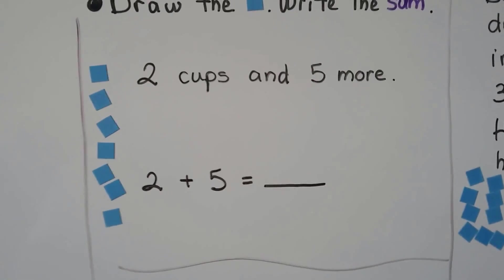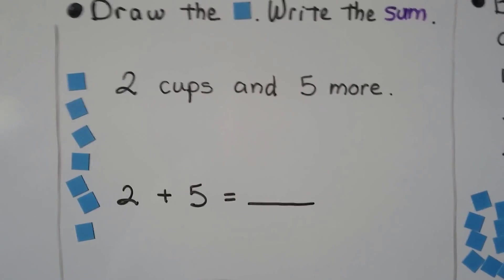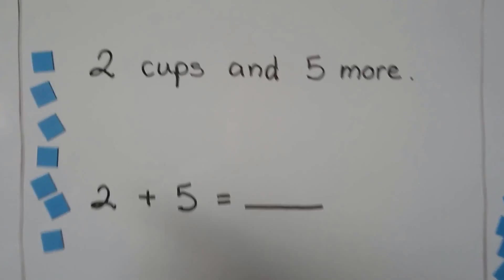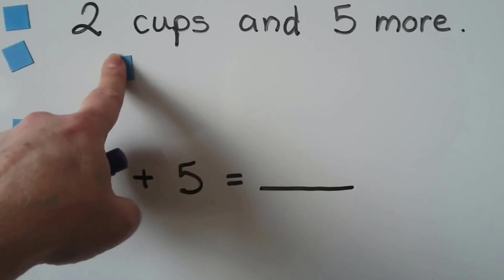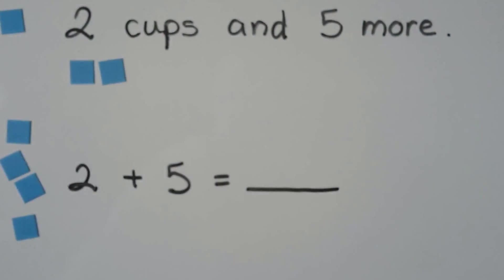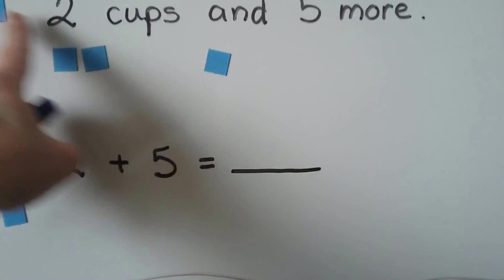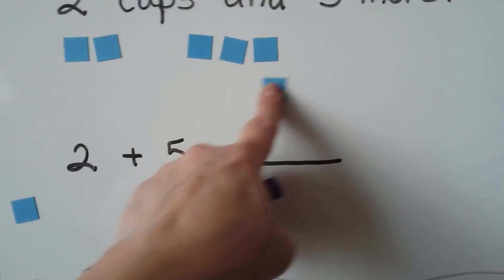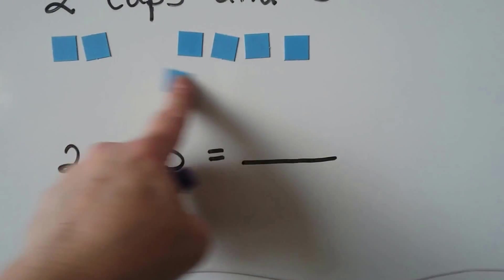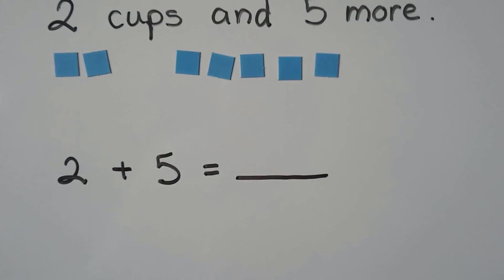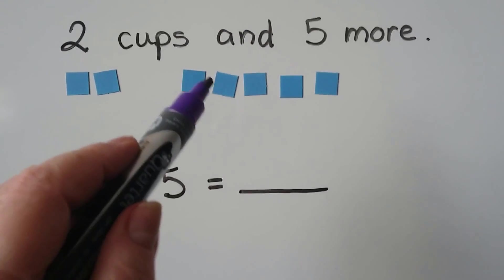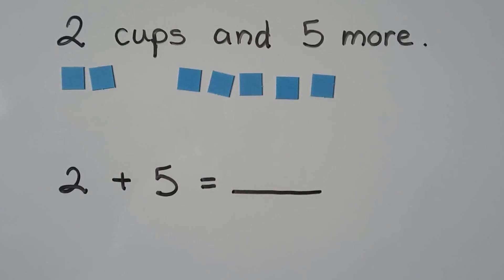We can draw the counters and write the sum. Two cups and five more. If we have two cups — one, two — and then five more: one, two, three, four, five. That would be one, two, three, four, five, six, seven. We could draw the counters.